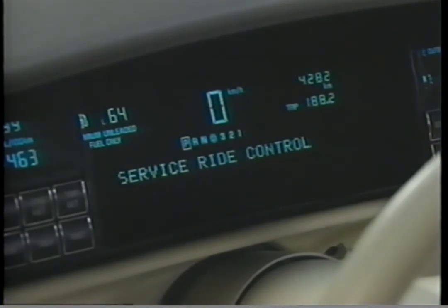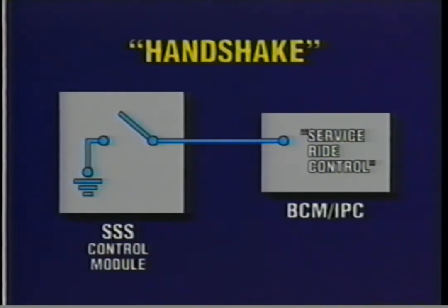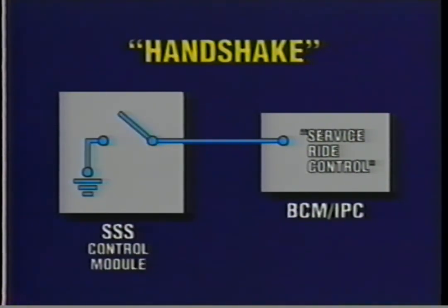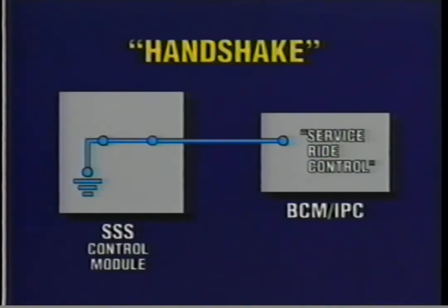On Eldorados, Sevilles, Allantes, and 1994 and later DeVilles, an error is indicated with a driver warning message. This requires the suspension module to communicate with the display devices. The electronic suspension system's control module must be able to handshake with the BCM or IPC depending on the model, through an output circuit. At roughly 15 miles per hour, the suspension module changes the output state from grounded to open for normal operation, or from open to grounded if a code is stored.